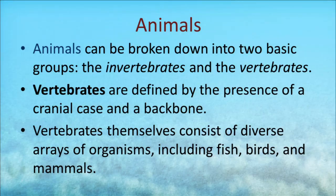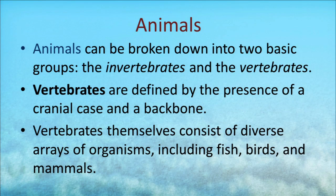Let's start with animals. When we think of animals, it's convenient to break them down into two basic groups: the invertebrates, which include animals such as worms and insects, and even things like sea urchins and sea stars, and then we have the vertebrates. To be called a vertebrate, you have to satisfy two criteria: one is the presence of a cranial case, meaning you have a skull or something that protects a brain, and the other, more commonly known, is that you have to have a backbone — some type of rigid structure that goes through your back.